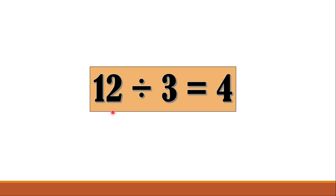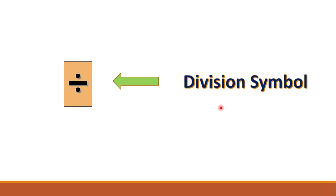This process of repeated subtraction is called division. We write it as: 12, then the division symbol, then 3, equals 4. We read it as: 12 divided by 3 equals 4. This is the symbol of division.